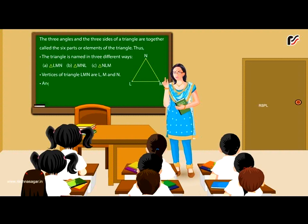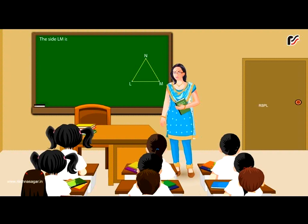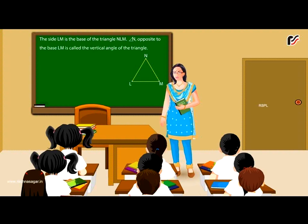Angles of triangle LMN are angle L, angle M and angle N. Line segments of triangle LMN are LM, MN and NL. The side LM is the base of the triangle NLM. Angle N opposite to the base LM is called the vertical angle of the triangle. Angle L and angle M are part of the base LM, hence are called base angles.